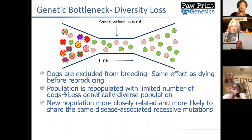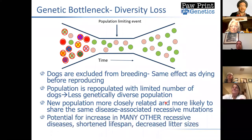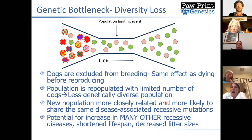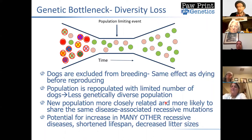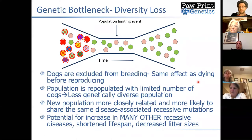Not only that, it's been shown that more closely related dogs produce offspring with a shortened lifespan compared to others, and may actually decrease litter size as well. There are questions popping up in the chat — let me go through this part here to explain a little bit more about this IVDD, because I might answer some of these questions, and then we'll circle back to discuss them further.